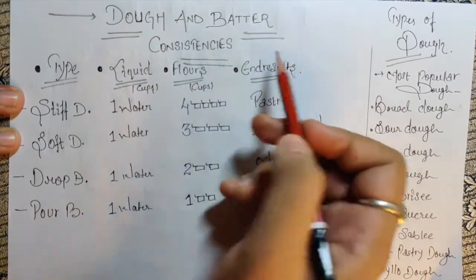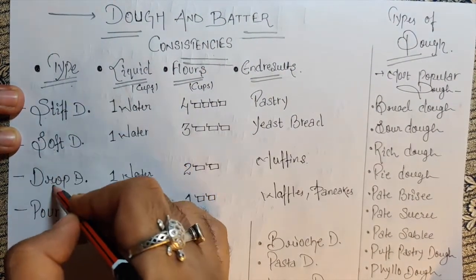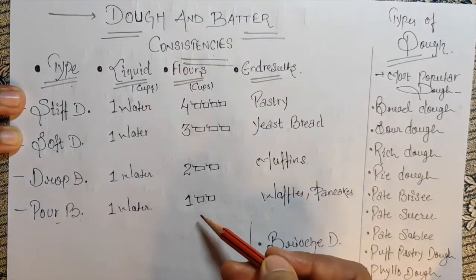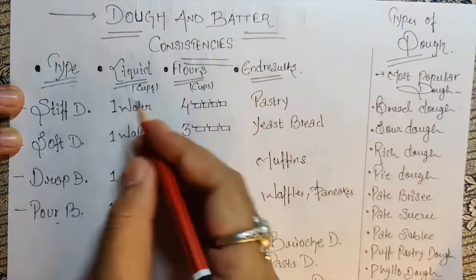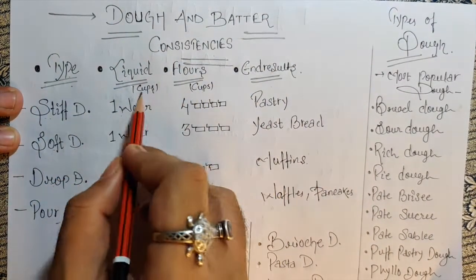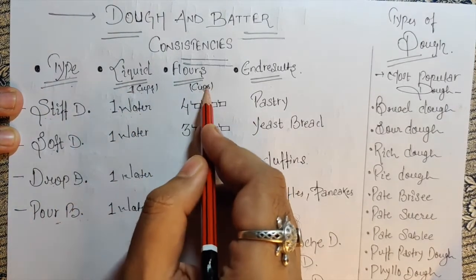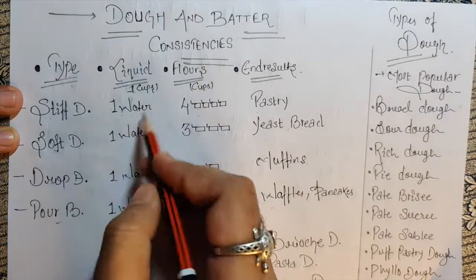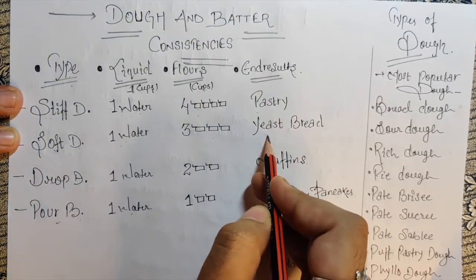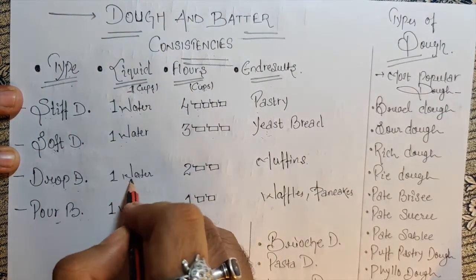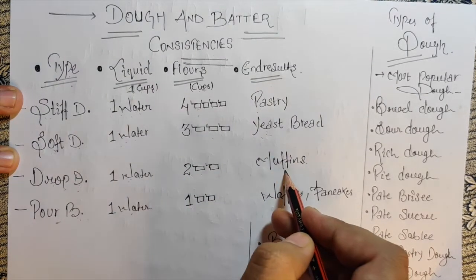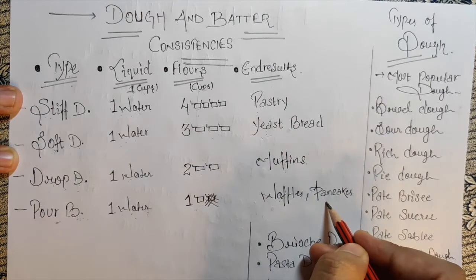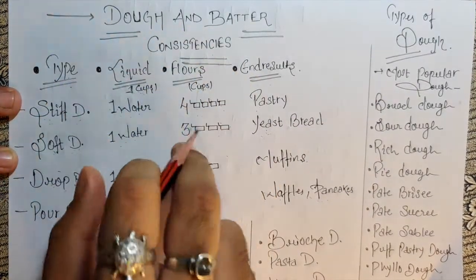Now, dough and batter consistency — the types are stiff dough, soft dough, drop dough, and pour batter. It depends on how much liquid and flour you add. Stiff dough: one cup of water and four cups of flour gives you pastry. Soft dough: one cup of water and three cups of flour gives you yeast bread. Drop dough: one cup of water and two cups of flour gives you muffins. Pour batter: one cup of water and one cup of flour gives you waffles or pancakes — a runny batter.